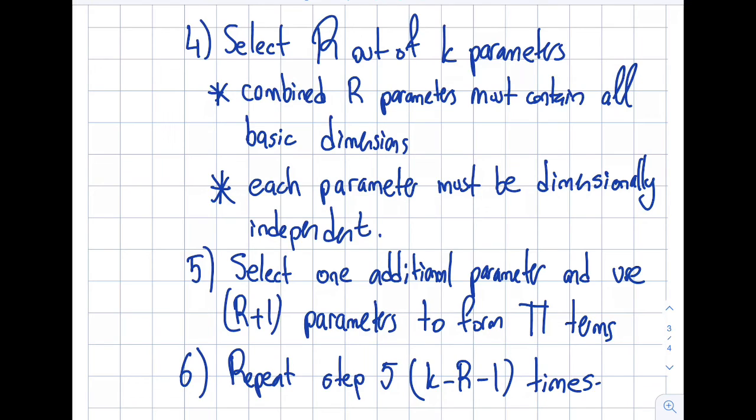So you must be very careful in this particular step. Step number five, let's say I have three parameters then I'm going to select one more. With these four parameters I will go ahead and find my pi terms and I will show you how to do this with an example.